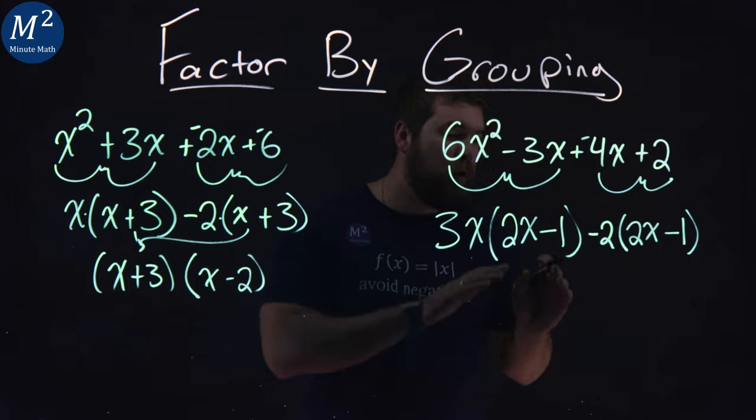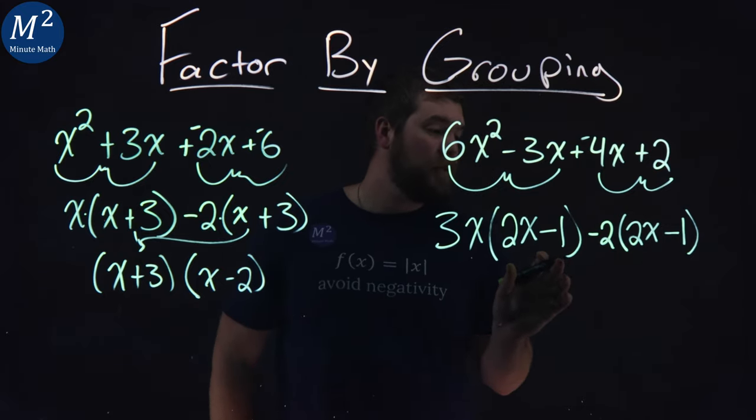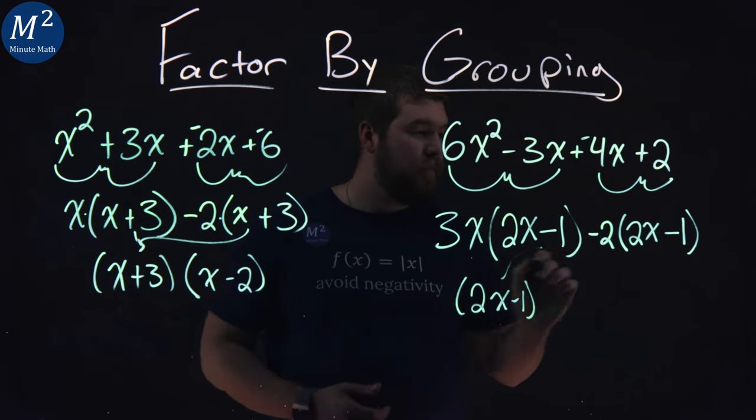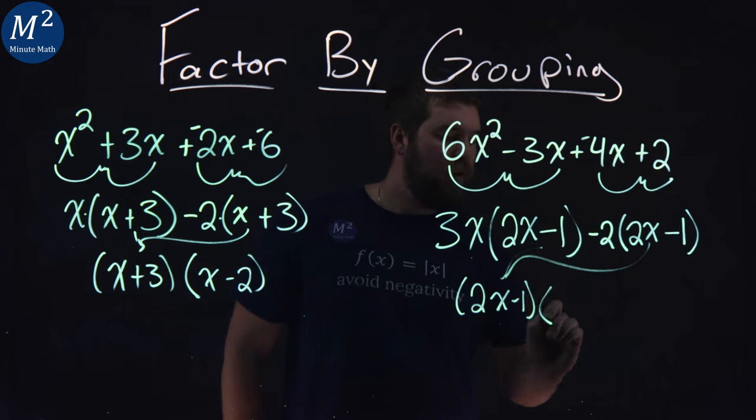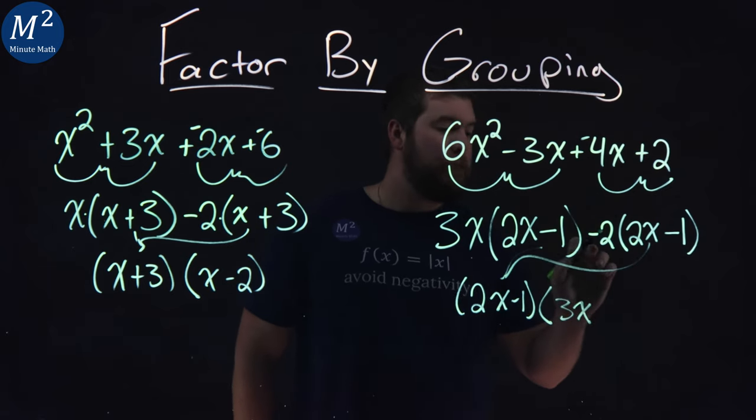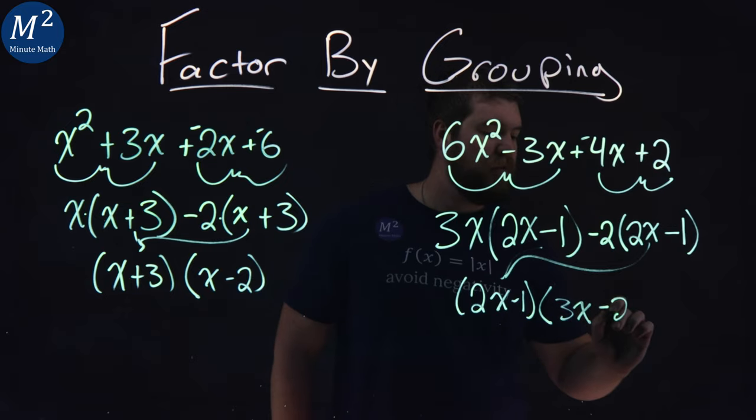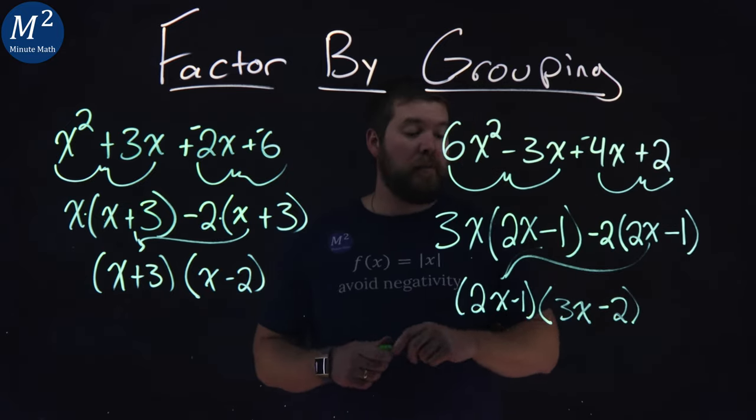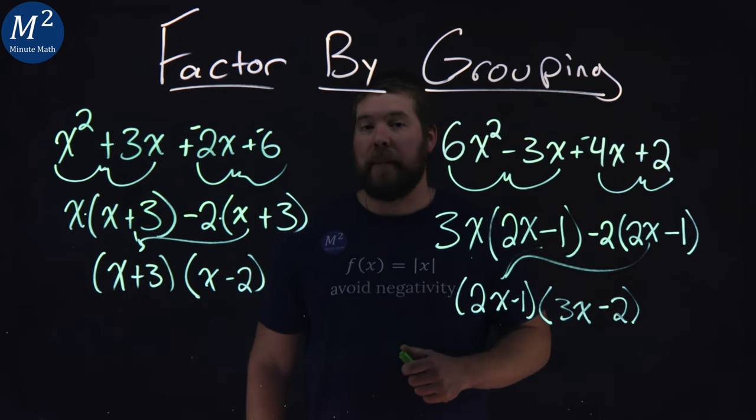So just like before, we're going to pull out a 2x minus 1 from both parts here. So we have a 2x minus 1. I pulled that out. And then we multiply that by what's left over, the 3x minus 2. And so the answer for our second example is 2x minus 1 times a 3x minus 2.